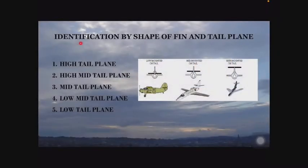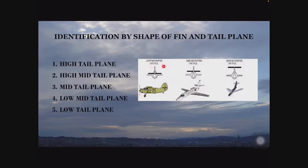Here we can see identification of an aircraft by its shape of fin and tail plane. Here are a few examples for the different shapes: five are listed. This is low mounted on tail plane, this is low mounted on tail, which is the same as low tail plane. This is mid tail plane, and this is high tail plane.